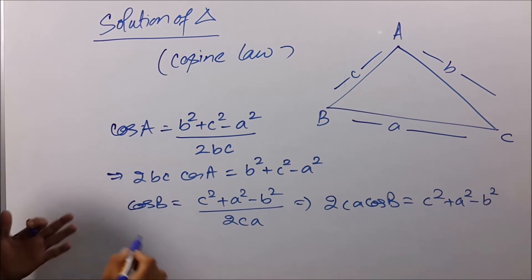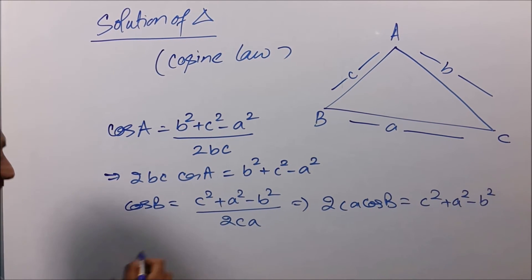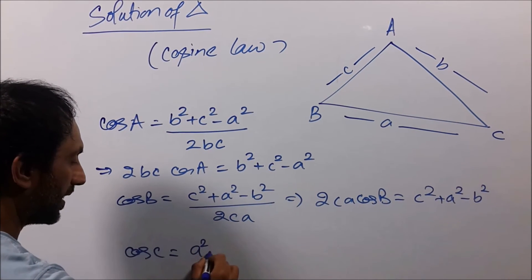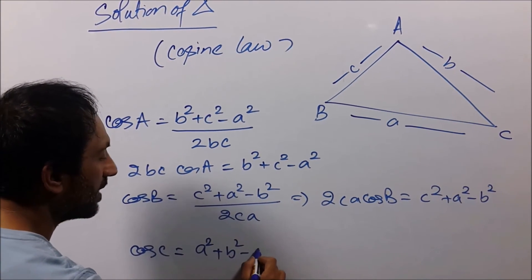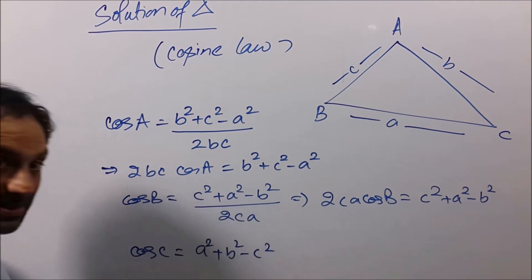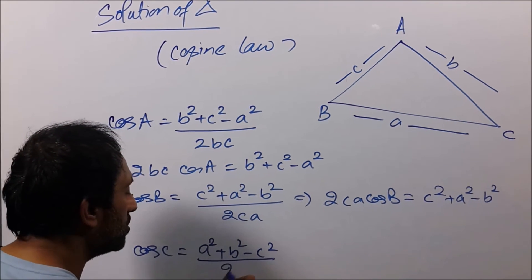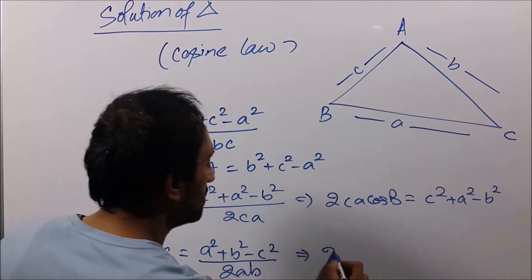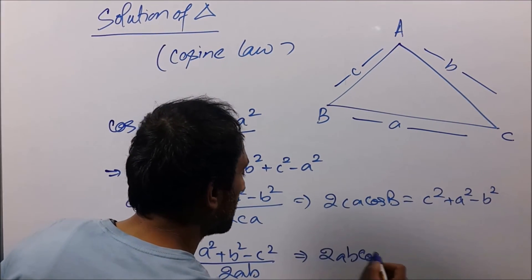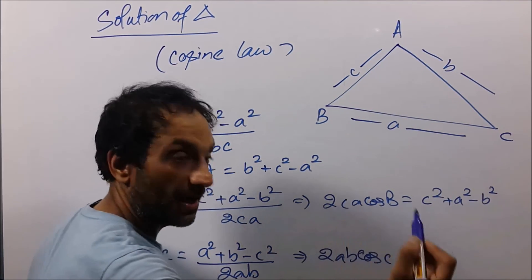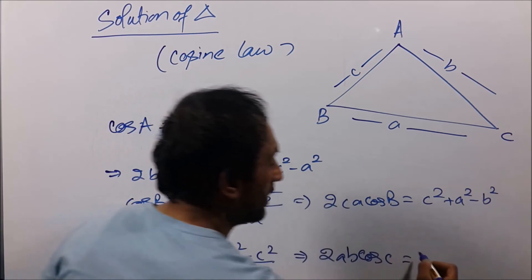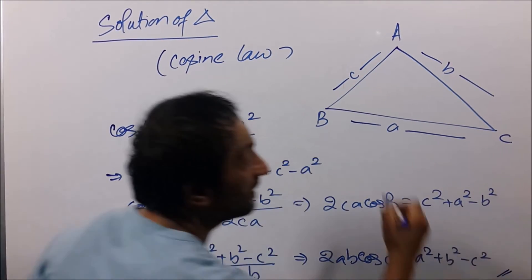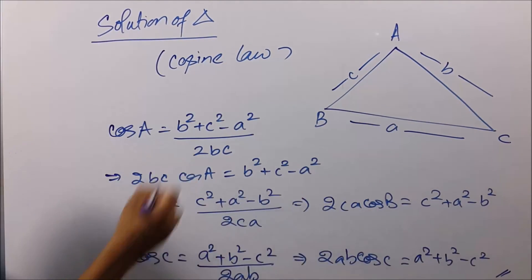And the third: cos C equals a² + b² − c² upon 2ab. You can also write it as 2ab·cos C equals a² + b² − c². This is the cosine law.